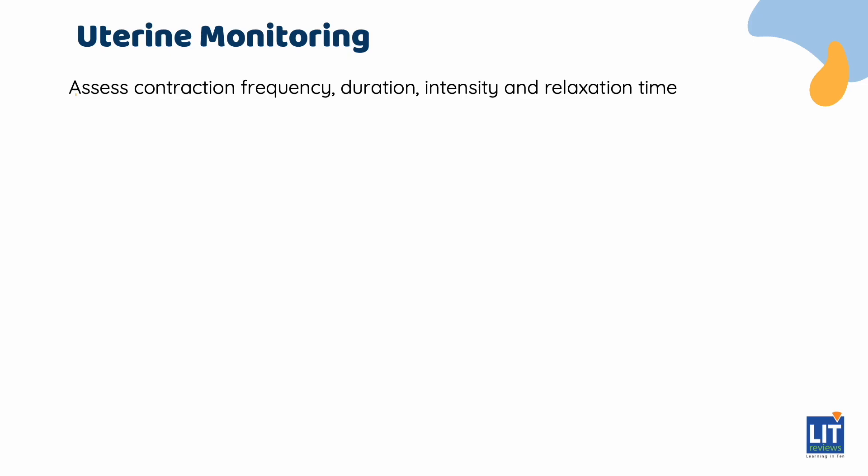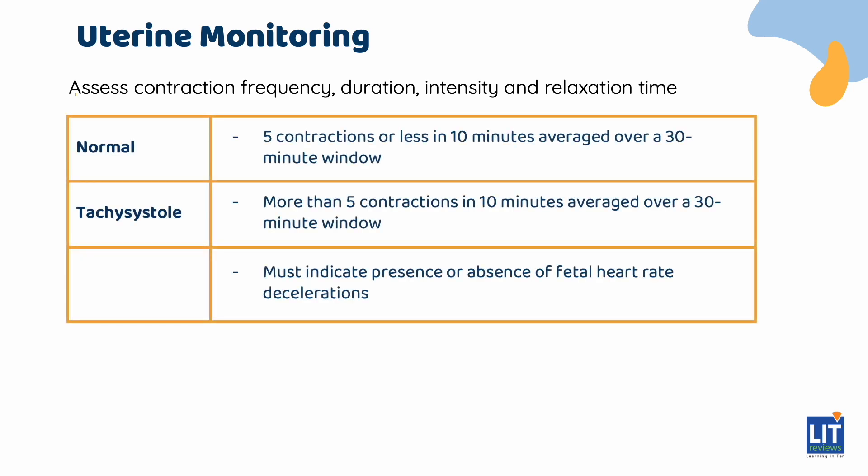The tocogram assesses the contractions' frequency, duration, intensity, and relaxation time. Normal uterine contractions are five or less in 10 minutes, averaged over a 30-minute window, lasting 30 to 60 seconds each time. Tachysystole refers to more than five contractions in a 10-minute window, averaged over 30 minutes. When there is tachysystole, you must indicate the presence or absence of fetal heart rate decelerations.